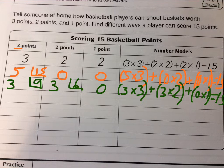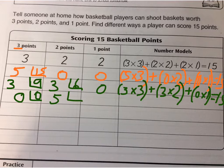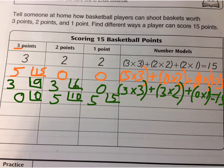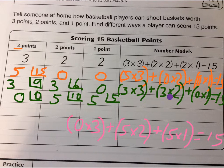This time let's go with zero three-pointers, which gives me zero. Still 15 away. Let's choose 5 two-pointers — five times 2 gives us 10. How many more do we need to reach 15? That's 5, so five one-pointers gets us there. Zero plus 10 plus 5 equals 15, and the number model is 0 times 3 plus 5 times 2 plus 5 times 1 equals 15.